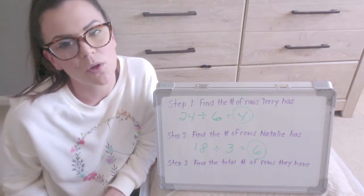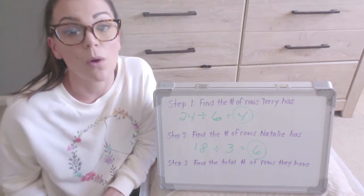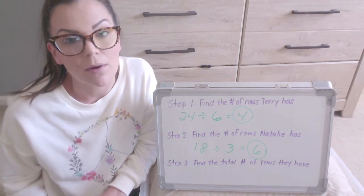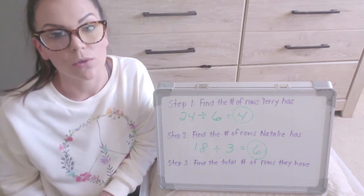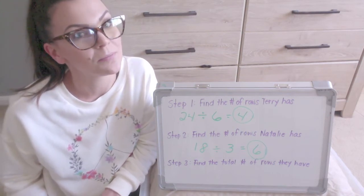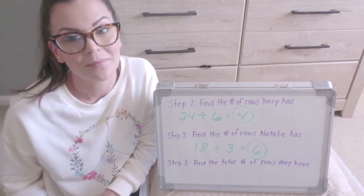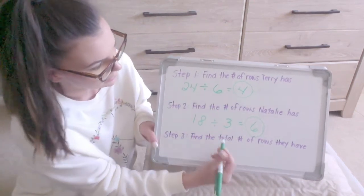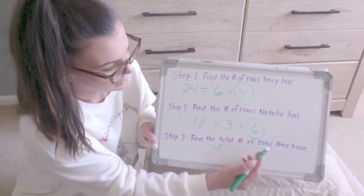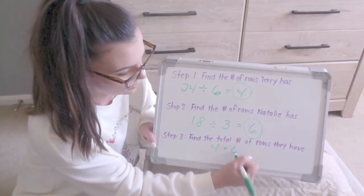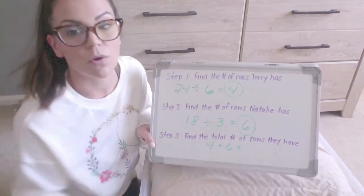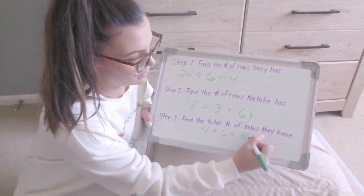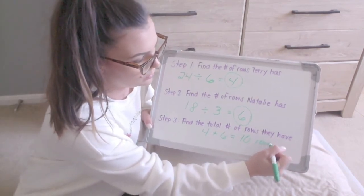But I'm not finished. The question asks how many rows do they have all together? So to find the number of rows in all or all together, I'm going to use addition. I'm going to find the total by taking Terry's rows and adding them to Natalie's rows. And that gives us ten rows all together.